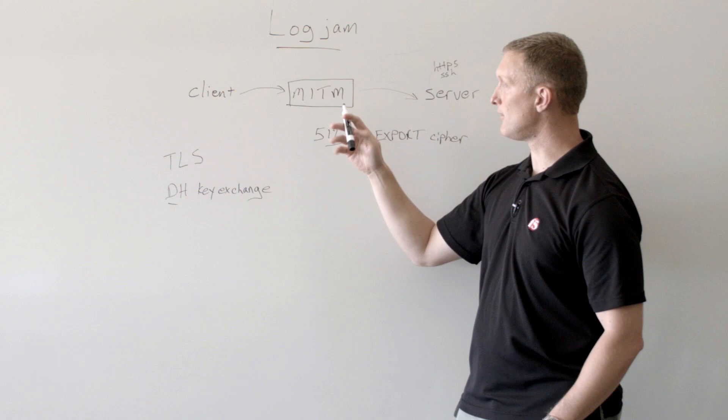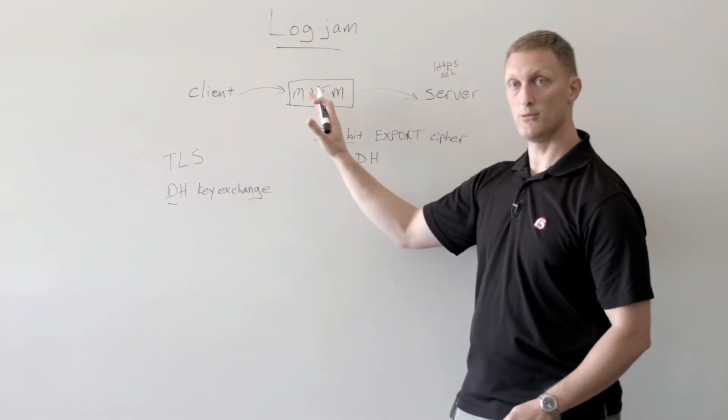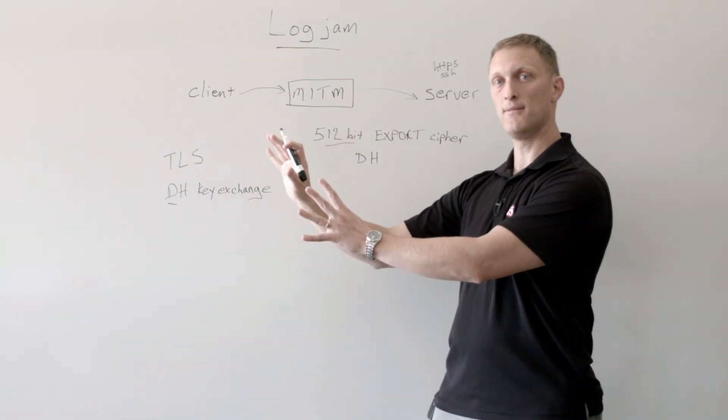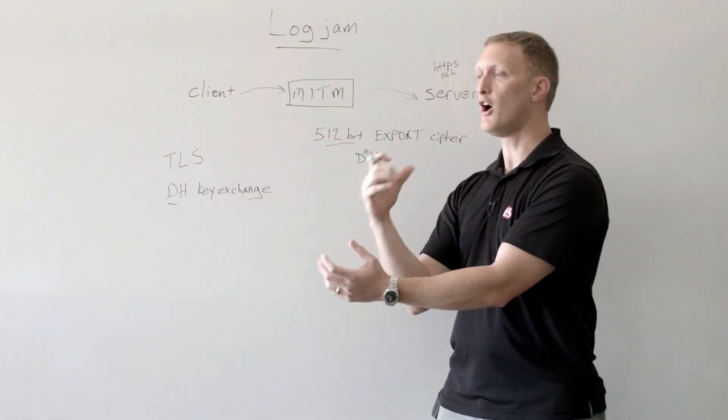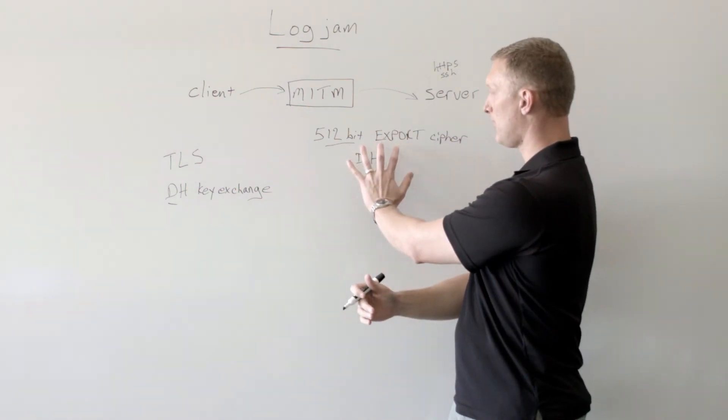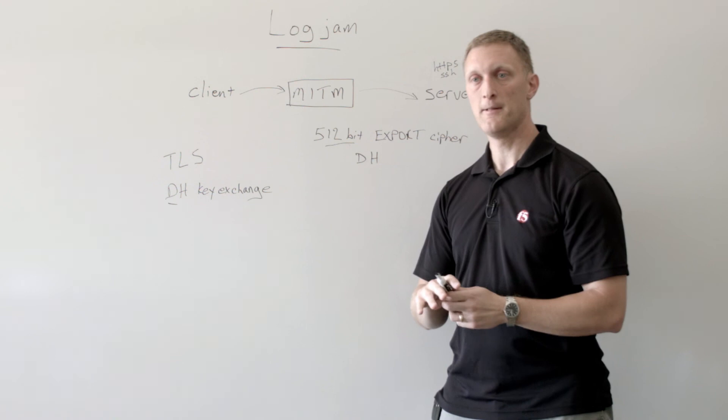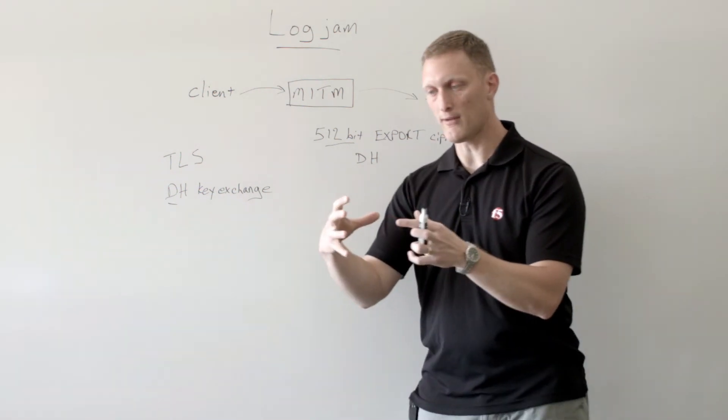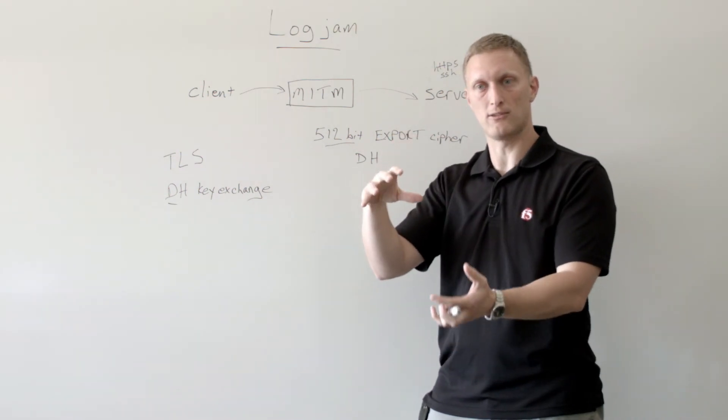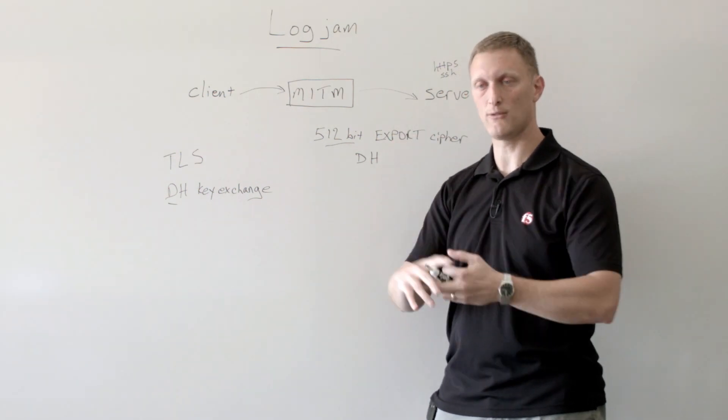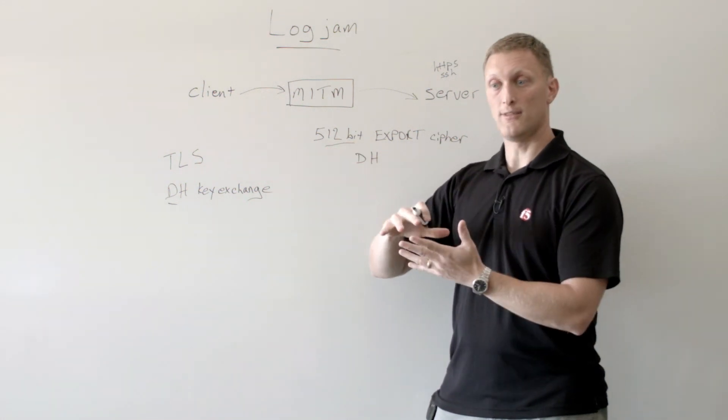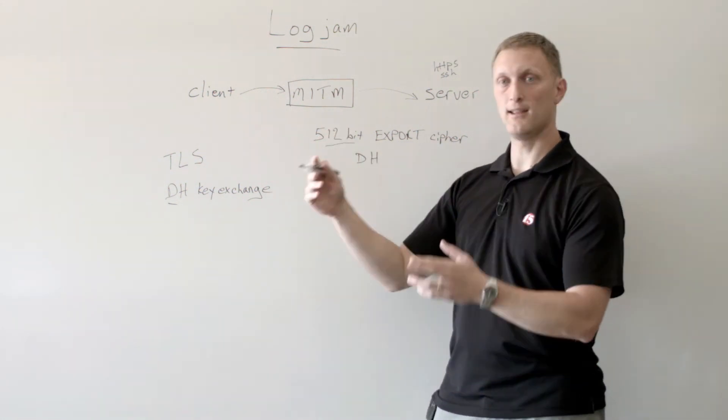Well, the man in the middle, this guy, if he can get the server to accept that, what he has done previously is he has pre-computed a whole bunch of potential keys that would be used with this Diffie-Hellman export cipher. And so if you can imagine the 512-bit, there's all these different keys that could be used, there's all these different possibilities in terms of what the key itself would be. But because it's not a really strong encryption, then that list becomes more finite.